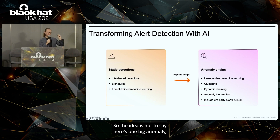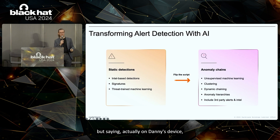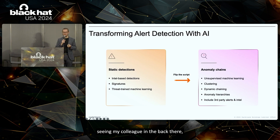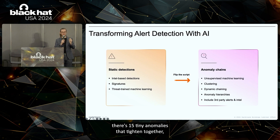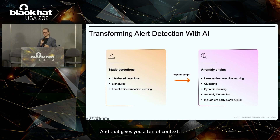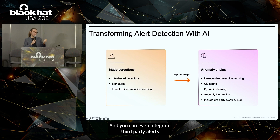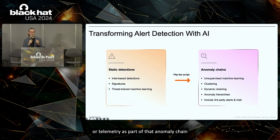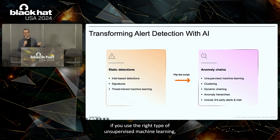The idea is not to say here's one big anomaly, good luck investigating — but to say, on Danny's device, there are 15 tiny anomalies that taken together make a really interesting incident potentially. That gives you a ton of context. You can even integrate third-party alerts or telemetry as part of that anomaly chain if you use the right type of unsupervised machine learning.